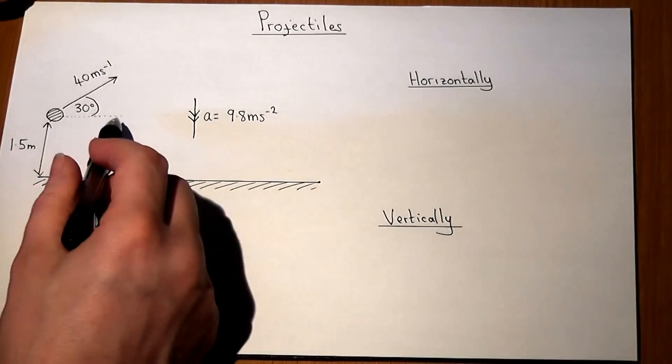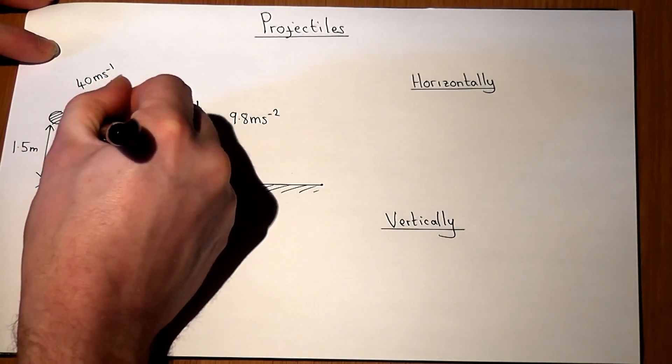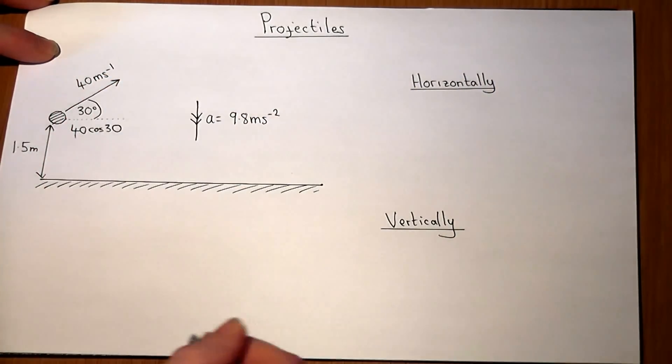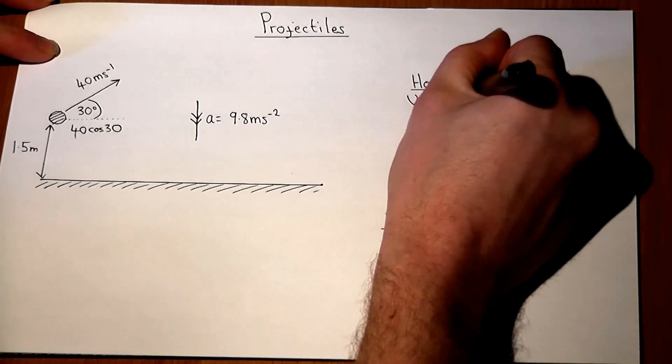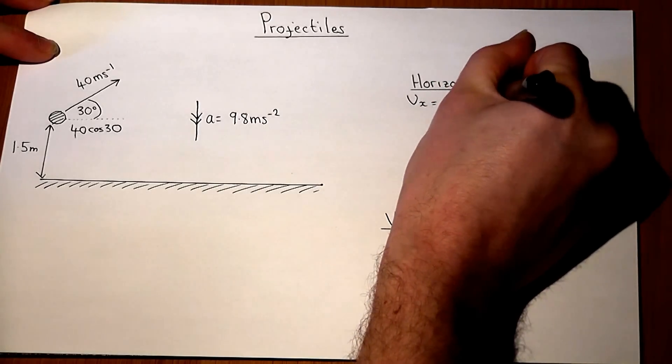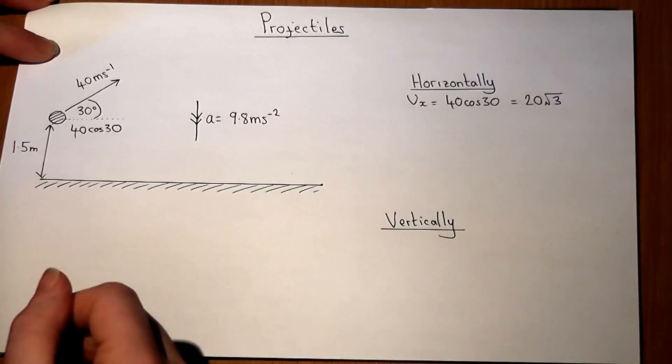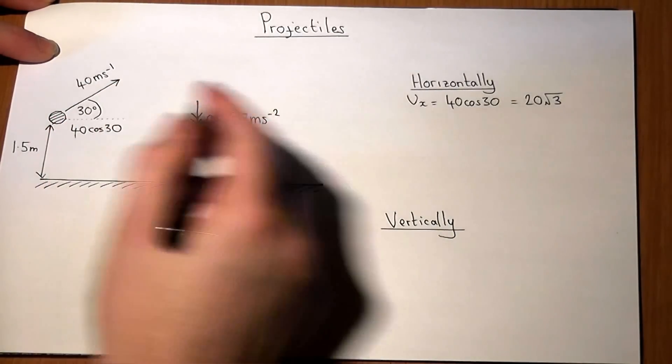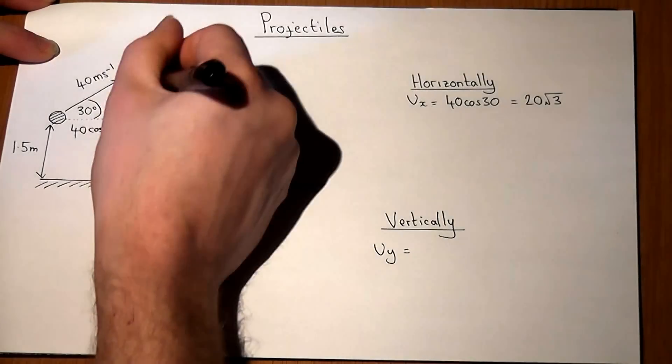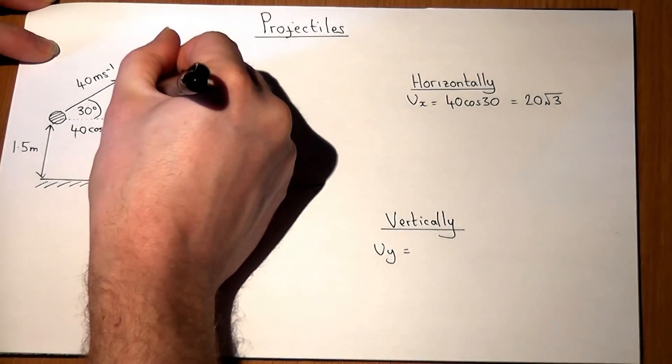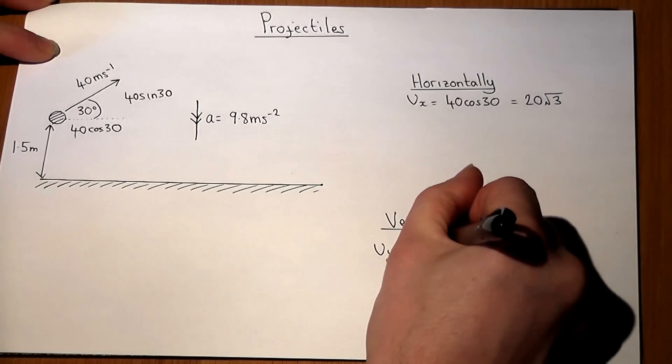So the adjacent component will be cos, so 40 cos 30. So u_x will equal 40 cos 30 which equals 20 root 3. And u_y, the initial velocity vertically, will equal 40 sin 30, that's opposite the angle, so that just equals 20.